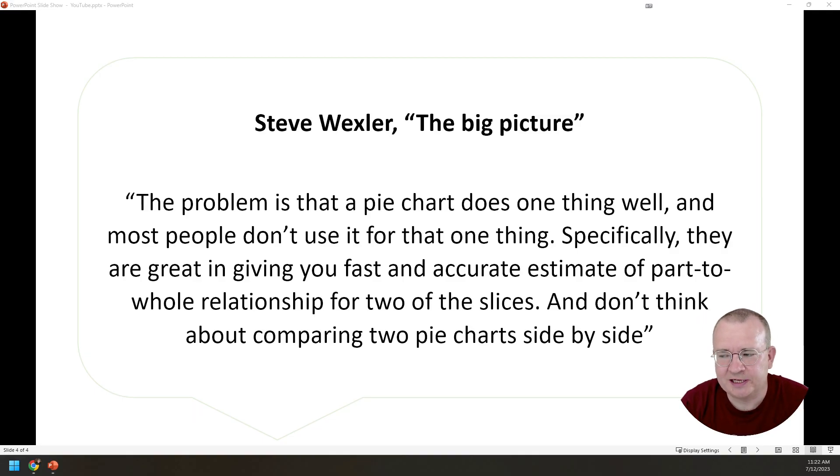I will quote Steve Wexler from his book The Big Picture. The problem is that a pie chart does one thing well and most people don't use it for that one thing. Specifically, pie charts are great in giving you fast and accurate estimate of part to whole relationship for two of the slices. And don't think about comparing two pie charts side by side.